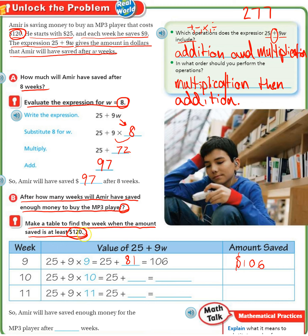Remember, he needs at least $120 — he can have more, that's fine, he'll get change — but he can't have less. After 10 weeks, it's going to be 25 plus 90, which is $115. Still not quite enough, but very close. Another week goes by — now we're at the 11th week. That's 25 plus 99, which is $124. He'll have $124, with $4 left over. So Amir will have saved enough money for the MP3 player after 11 weeks.